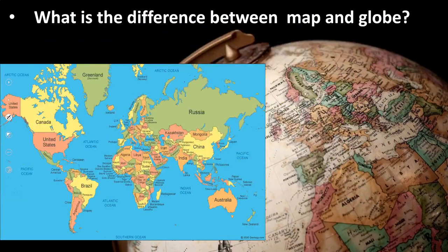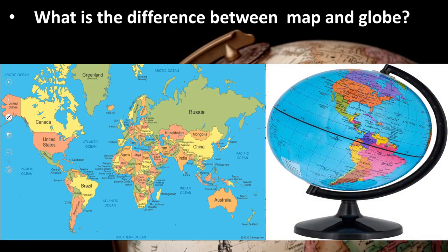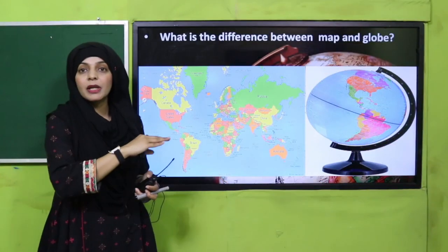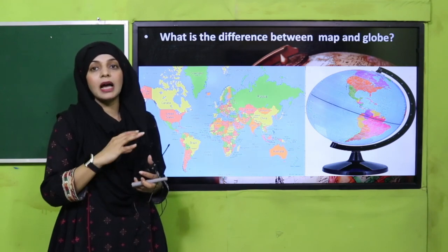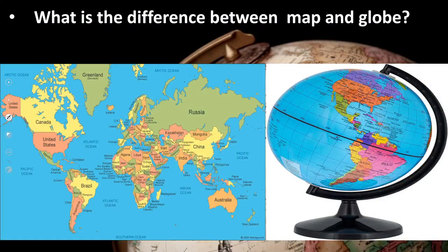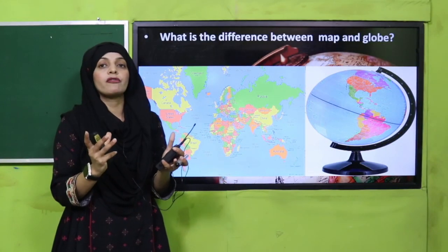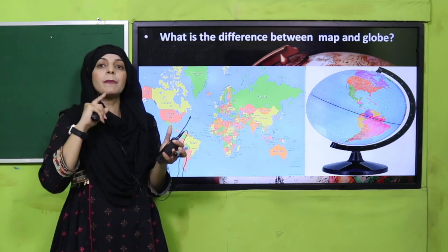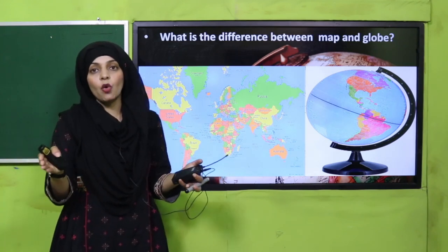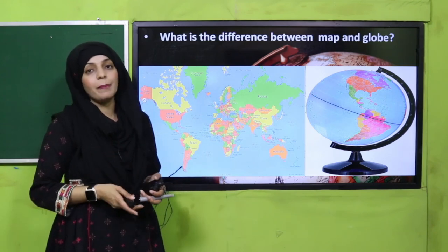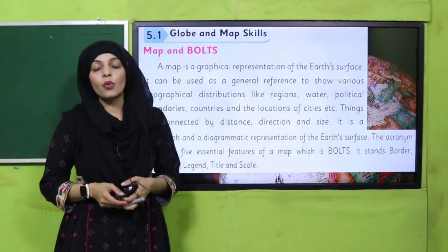The next question is: what is the difference between a map and a globe? You can see both pictures. A map is a flat piece of paper, whereas a globe is a 3D representation of the earth. You can locate things on a globe from all sides, whereas a map is only drawn on paper. This is the difference between a map and a globe.